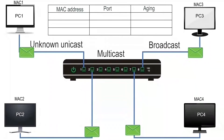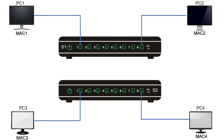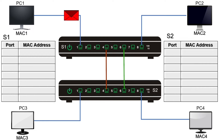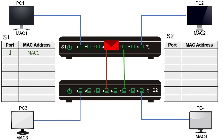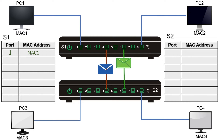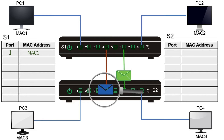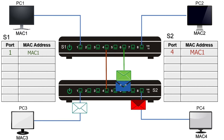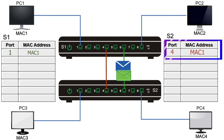Now we know how a switch learns MAC addresses and makes forwarding decisions. Let's move back to the switching loop and understand how it occurs. Here we have two switches connected with two links, creating a switching loop. PC1 generates a broadcast frame. The frame reaches S1 on port 1. S1 reads the source and destination addresses, adds the source address to the CAM table, and since it is a broadcast frame, forwards it from all active ports. S2 receives it on ports 4 and 6. Suppose it first receives it on port 4. S2 reads the frame, adds the source address to the CAM table, and forwards the frame from all ports except port 4. At this point, the switch knows MAC1 is available on port 4.